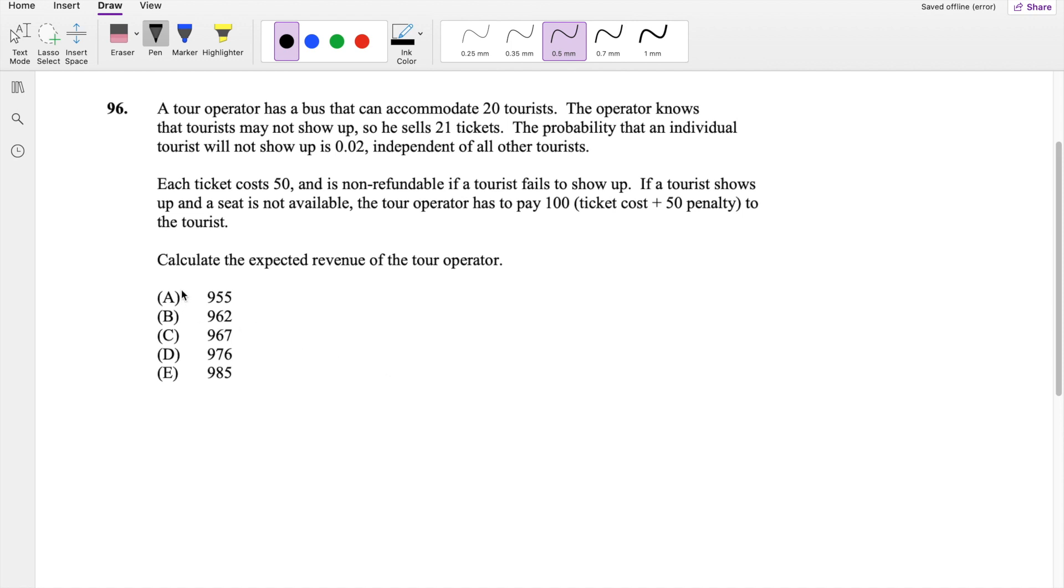So they ask you to find the expected revenue of the tour operator. We do know that it can accommodate 20 tourists, but he sold 21. And each ticket costs $50. So that means it's going to be 21 times 50, right? That's how much money he got from all his customers.